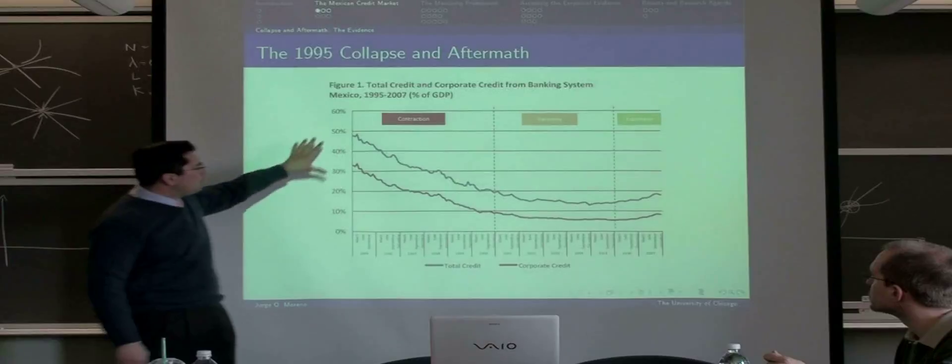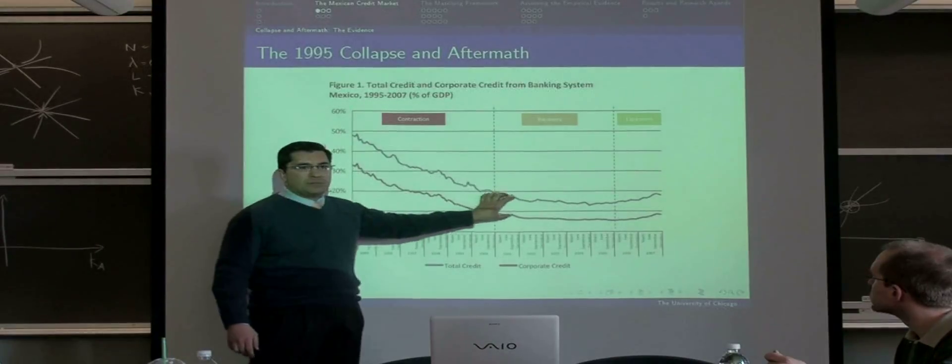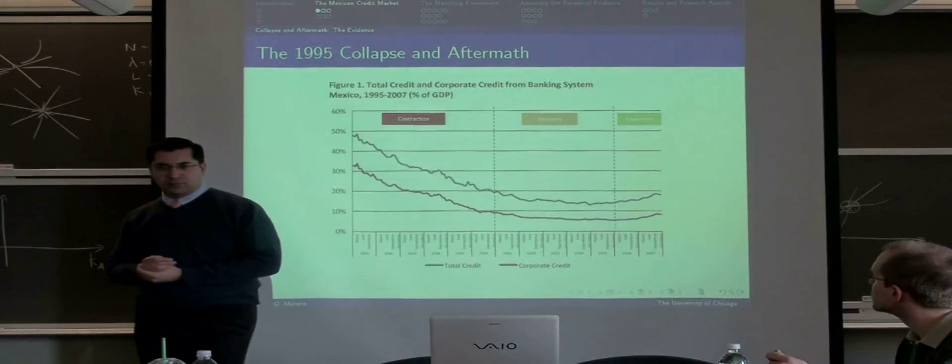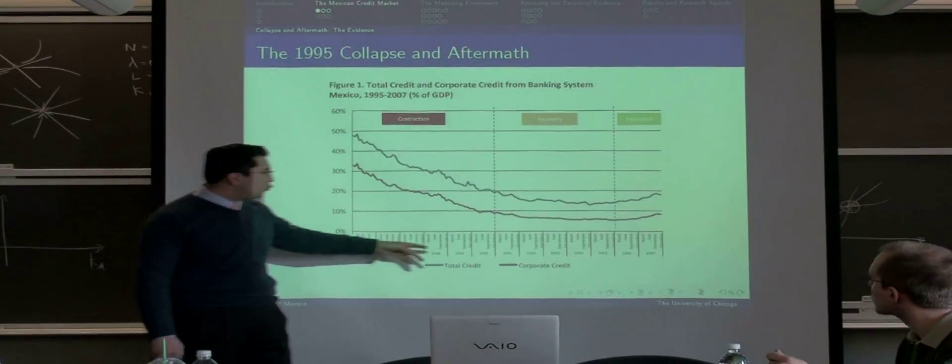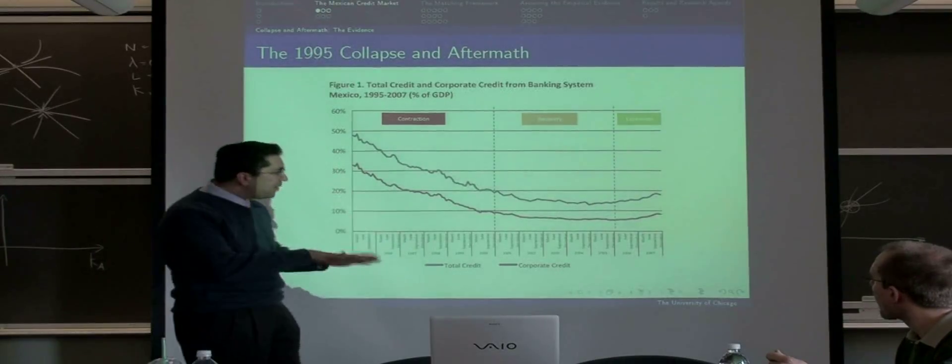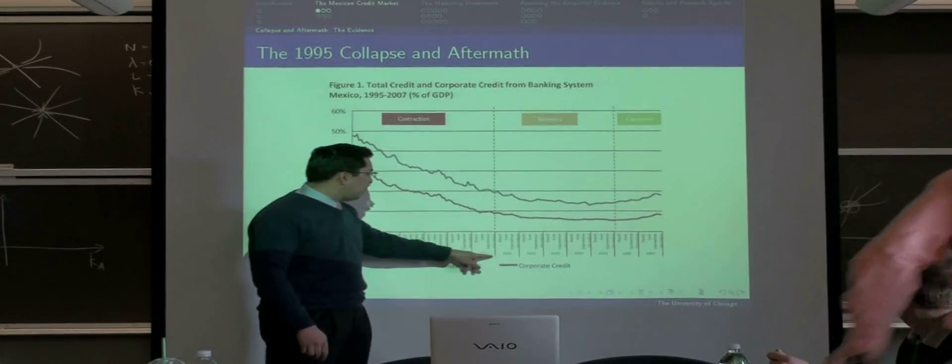Then suddenly, we have a huge contraction in the banking activity. This huge contraction lasts from 1995 to 2000, and then starts to stabilize by 2001.